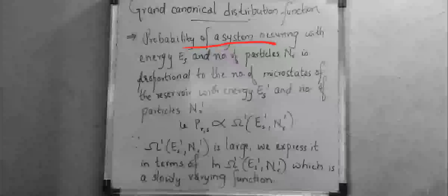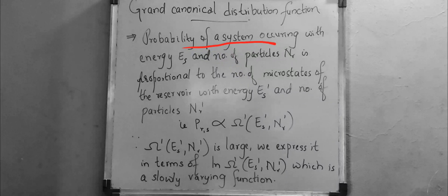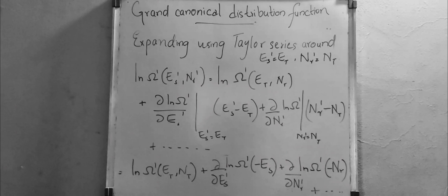So P_RS is proportional to Ω'(E_S', N_R'). Since Ω' is a very large quantity, we express it in terms of log Ω', which is a slowly varying function. We then expand log Ω' using a Taylor series around E_S' = E_T and N_R' = N_T.